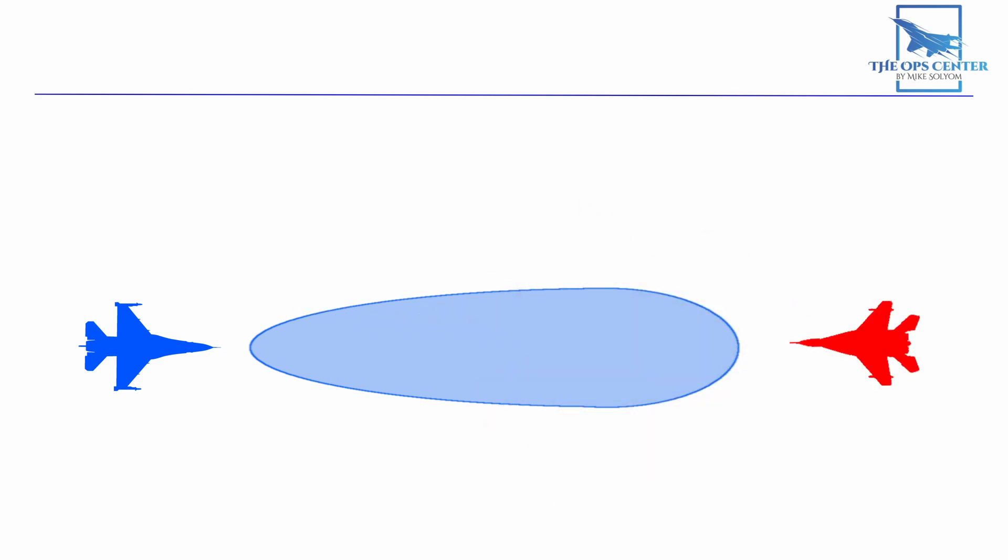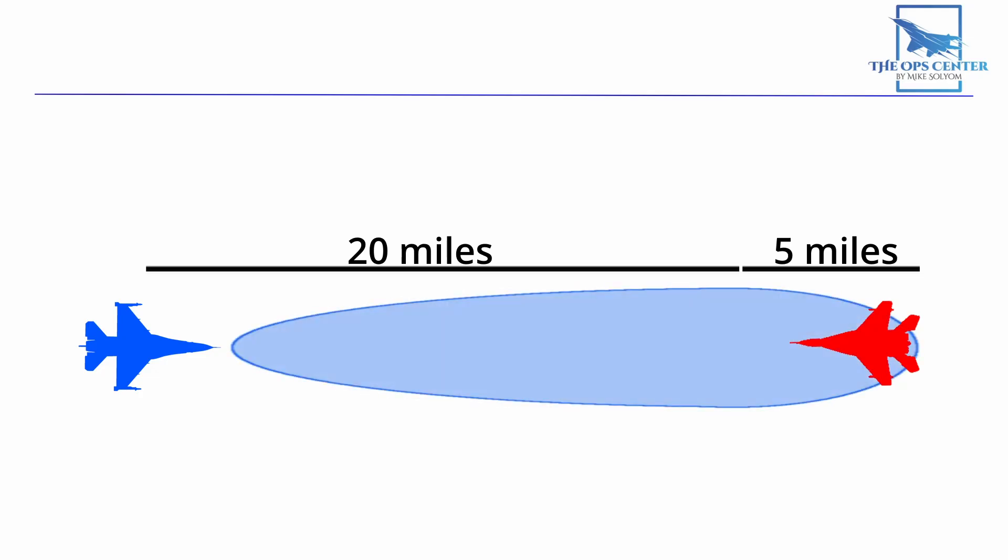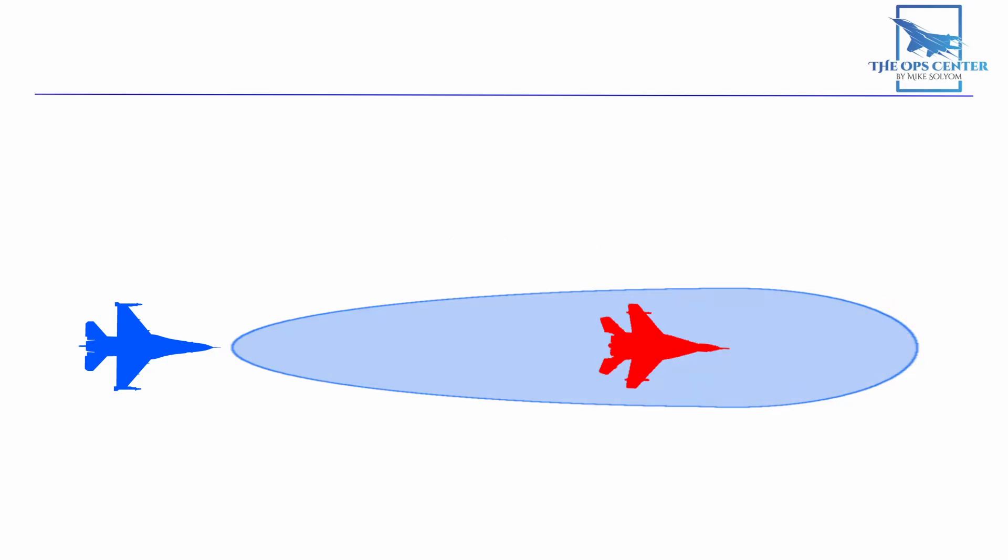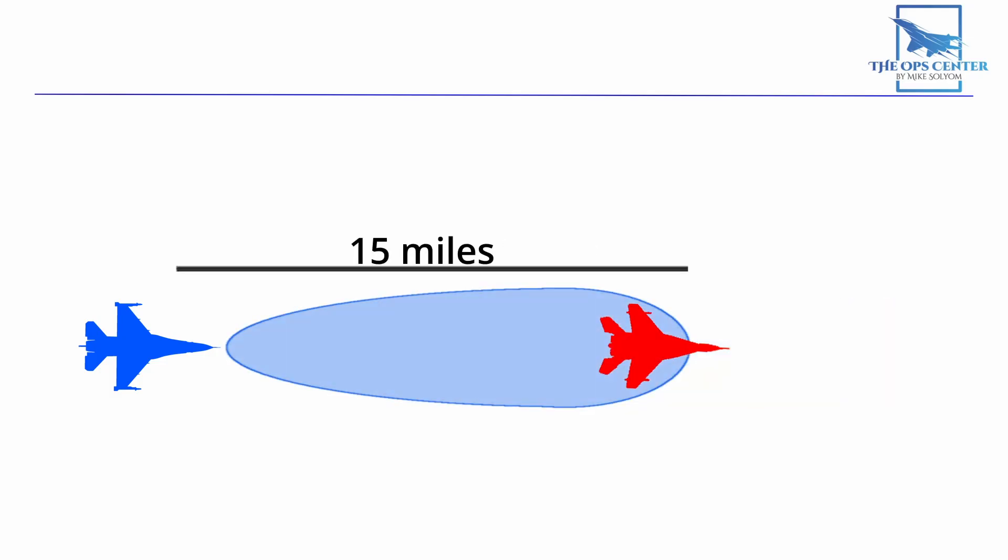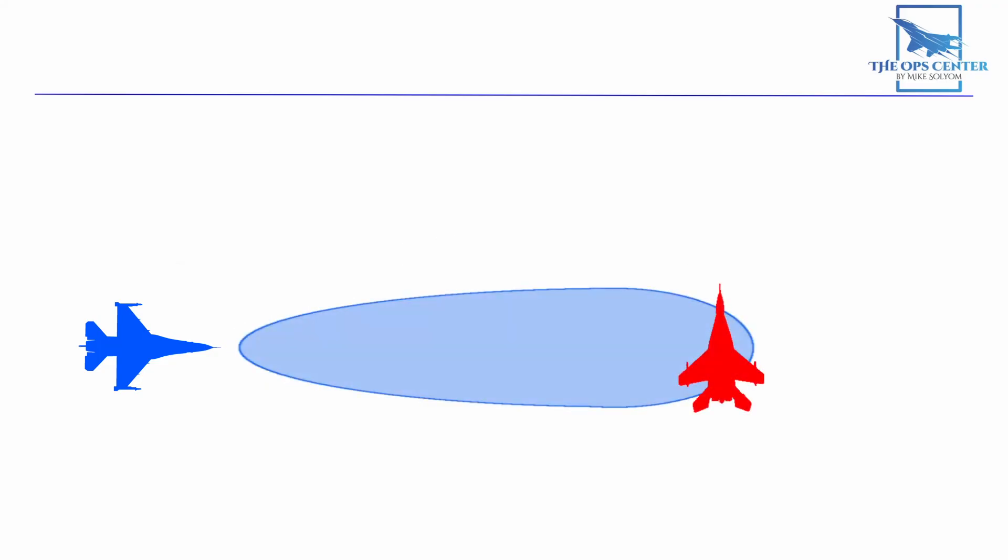So imagine a missile that can travel 20 miles over its time of flight. During that time, a target flying towards the missile covers 5 miles. That would mean the launching aircraft could fire from 25 miles away, making the effective WEZ 25 miles from that head-on aspect. Conversely, with the target flying away from the missile, the WEZ would be reduced by 5 miles down to 15. Side aspects would be somewhere between these two.